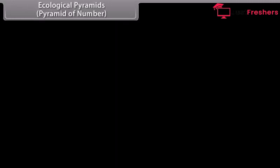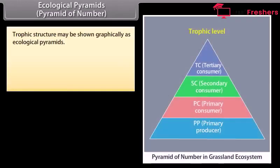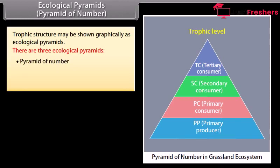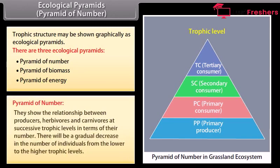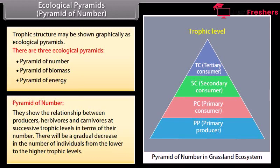Ecological pyramids. Trophic structure may be shown graphically as ecological pyramids. There are three ecological pyramids: pyramid of number, pyramid of biomass, and pyramid of energy. The pyramid of number shows the relationship between producers, herbivores, and carnivores at successive trophic levels in terms of their number. There is a gradual decrease in the number of individuals from the lower to the higher trophic levels.